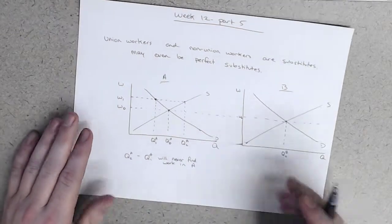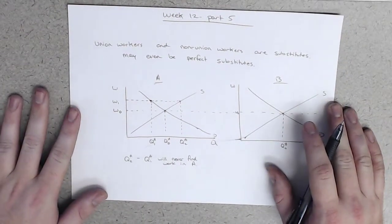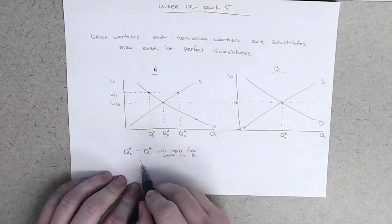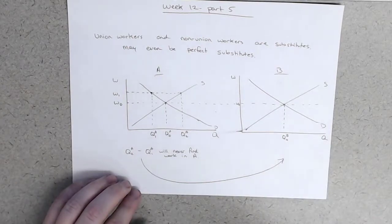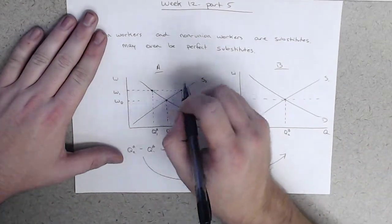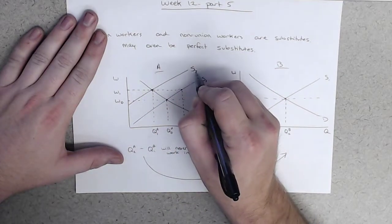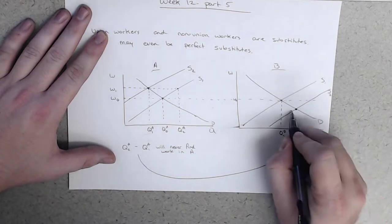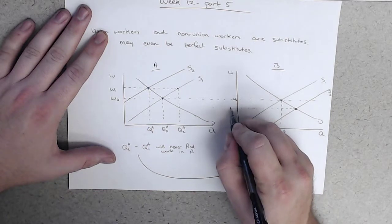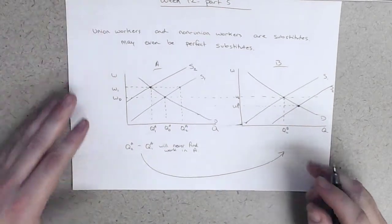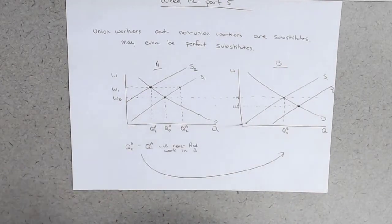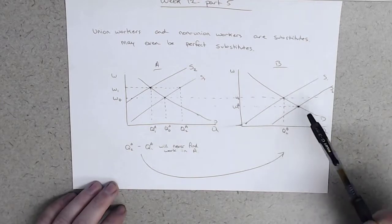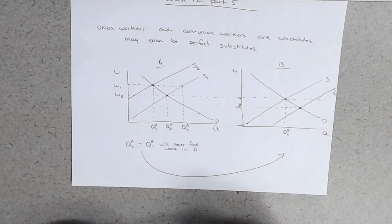And so what we end up seeing happen is actually these workers leave and come over here. Well, so those workers leaving actually end up reducing the supply of labor over here, and increasing the supply of labor over here, and decreasing the wages. And so what ends up happening is because workers in A unionized and got their higher salaries, they actually might have ended up pushing down the wages of workers in employment or labor market B.